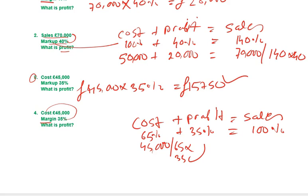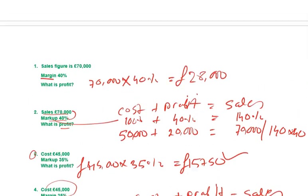The answer is approximately twenty-four thousand two hundred and thirty-one. If you add that to your cost of forty-five thousand, you get sixty-nine thousand two hundred and thirty-one. That is how you do your conversions.